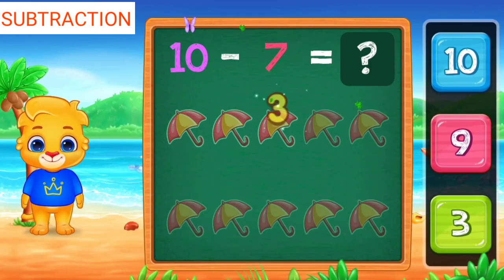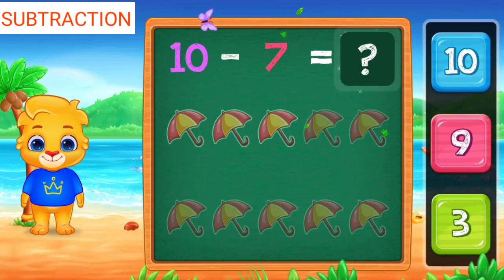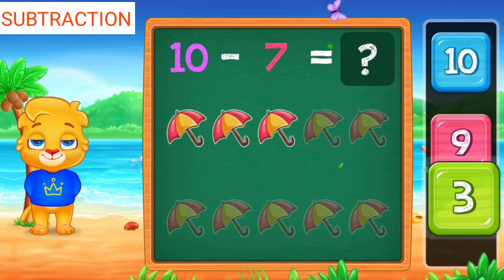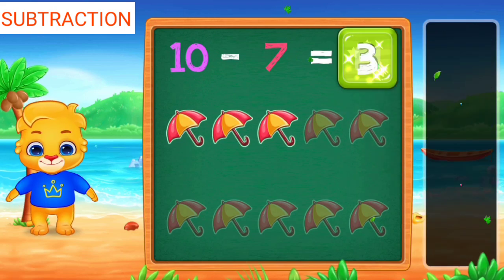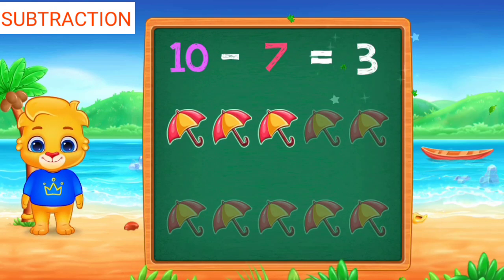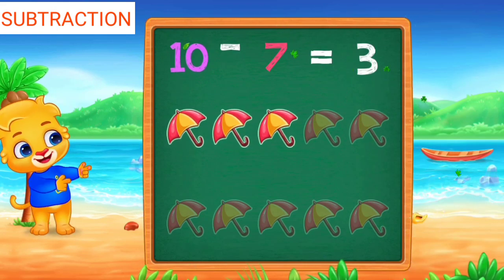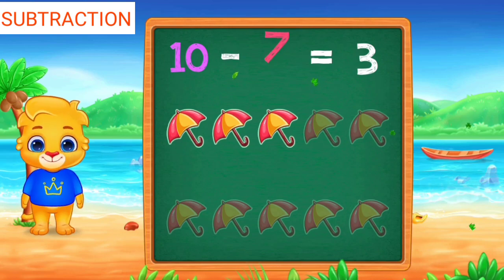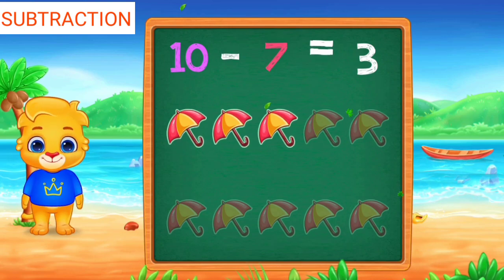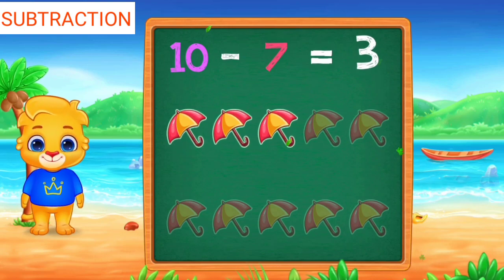Three, three, three, ten minus seven minus four equals three.